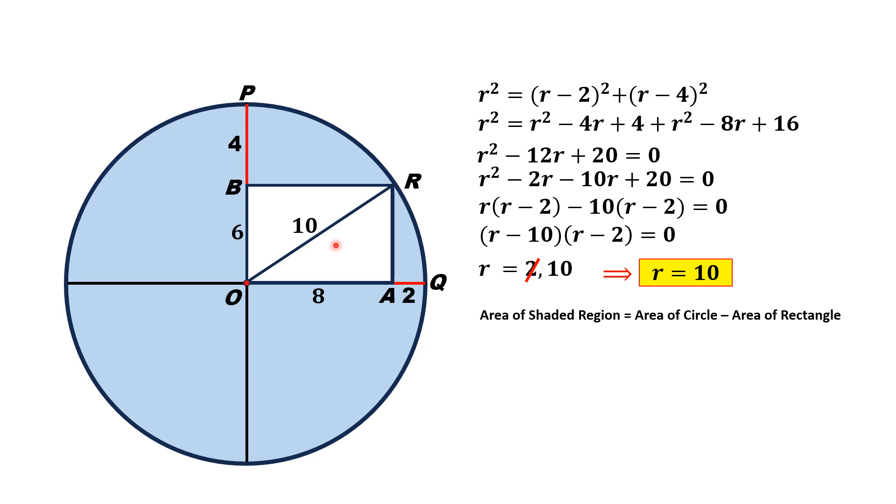The area of the rectangle is length times breadth, where length is OA and breadth is OB. Substituting all the values, we have radius is equal to 10, OA is 8, and OB is 6.